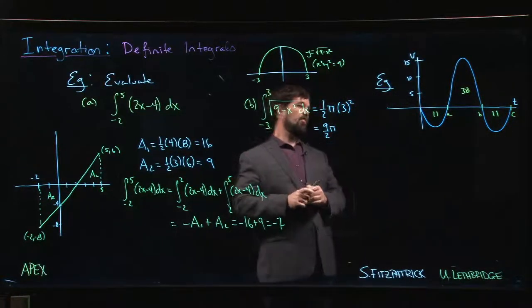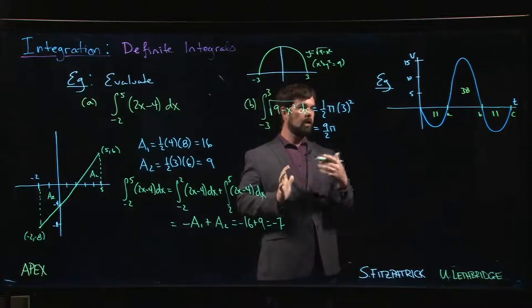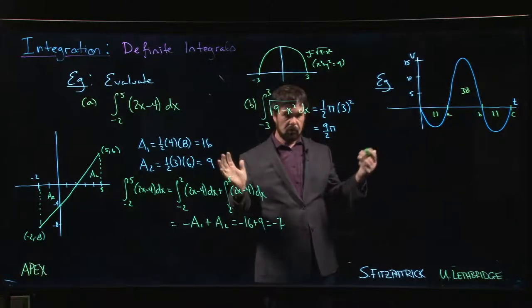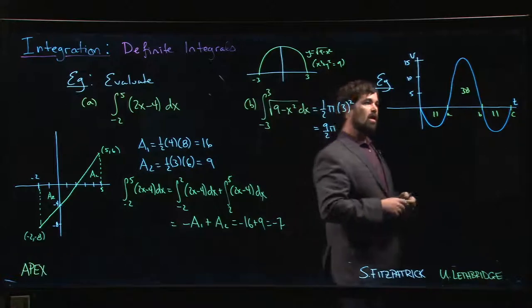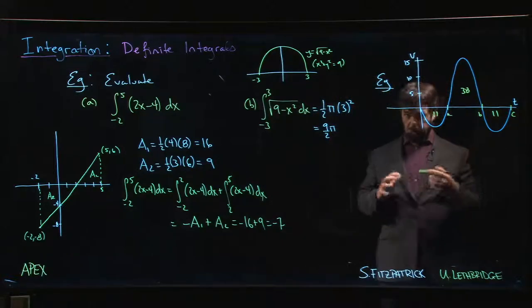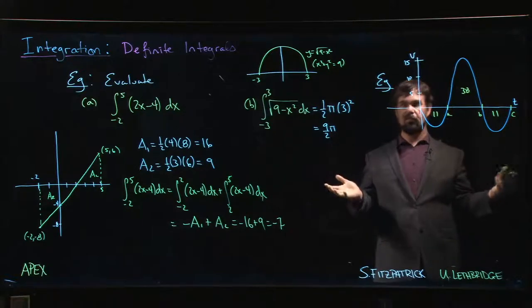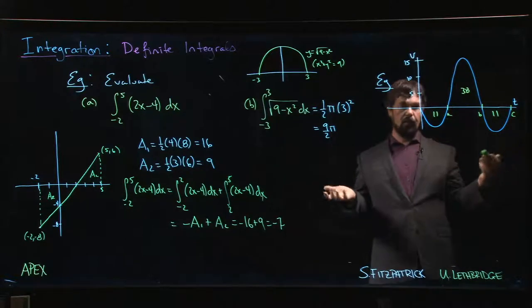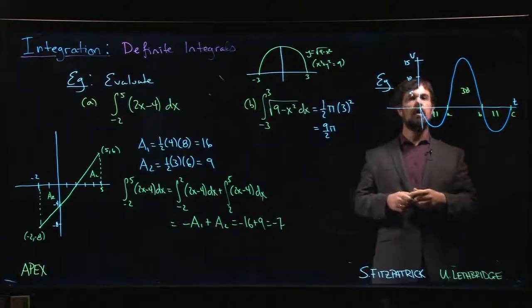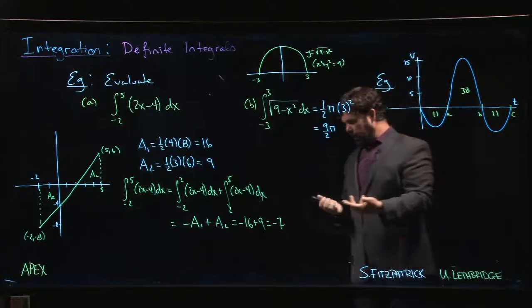So here's our final example for this section. We're given the following graph which illustrates the velocity of some object with respect to time. We've got velocity as a function of time for some object moving from some initial position.